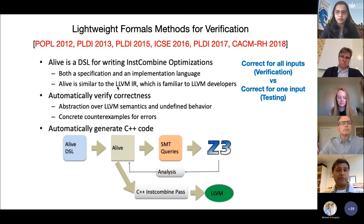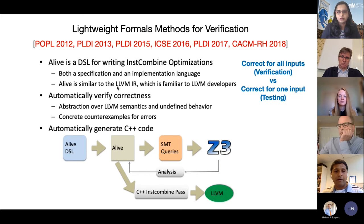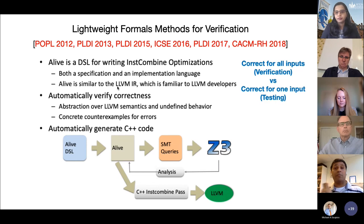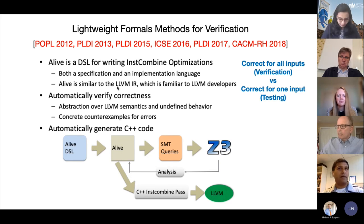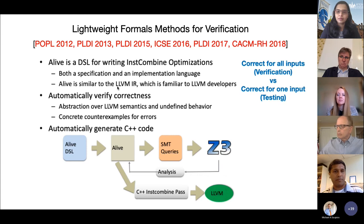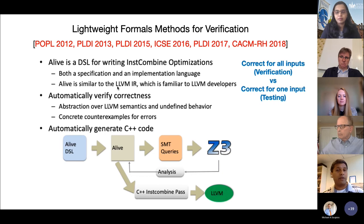Formal verification for large systems used to take a lot of effort, and mainstream programmers pressed for time would not adopt it. What we have done in my group is design a domain-specific language to make formal verification much easier. For a collection of optimizations that are historically very buggy, the programmer specifies the optimization in our DSL, and our underlying interpreter automatically checks correctness using math-based reasoning and also generates C++ code that performs the optimization. This is Alive — the Automatic LLVM Instruction Combined Verifier. By having such abstractions, we can push formal methods into developers' tool chains.